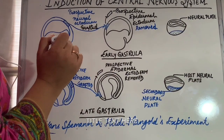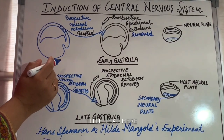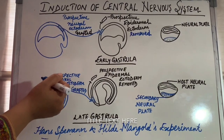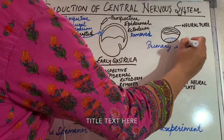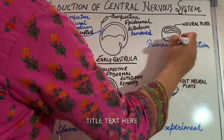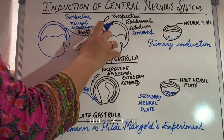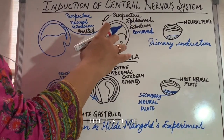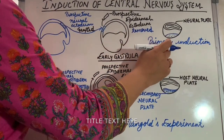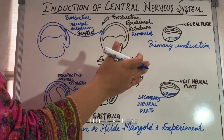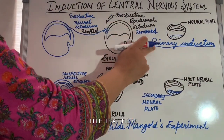This type of interaction between the ectoderm and the precordal mesoderm — also called the dorsal mesoderm — is known as primary induction. Why is it called primary induction? Because earlier it was believed that this event takes place first — that neural ectoderm forms first, by induction of the precordal mesoderm with the ectoderm. Now we know that mesodermal induction happens earlier, but the same name persists and this is still called primary induction.